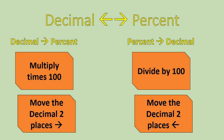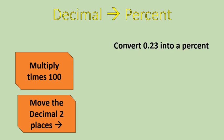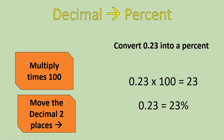Let's look at some examples. Try converting this decimal to a percent — either multiply times 100 or move the decimal two places to the right. If you multiply times 100, you'll get 23. If you shift the decimal two places to the right, it would start here and move one and two. Either way, 0.23 is 23%.